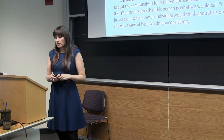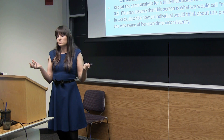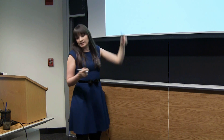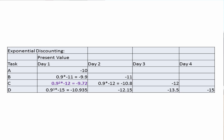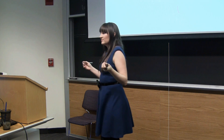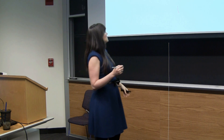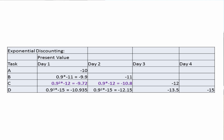When day two approaches, what task will this person decide to complete? We do the same calculation from the perspective of day two. Now activity B is not discounted, activity C is discounted by one period, and activity D is discounted by two — so δ × (−12) and δ² × (−15). With exponential discounting, as we move forward in time we're simply dividing all present values by δ, so there's no way the ranking can switch. This person still says task C is the best.